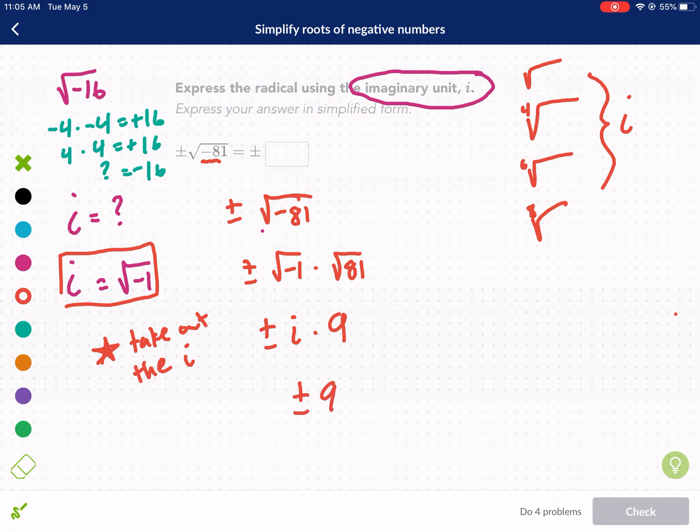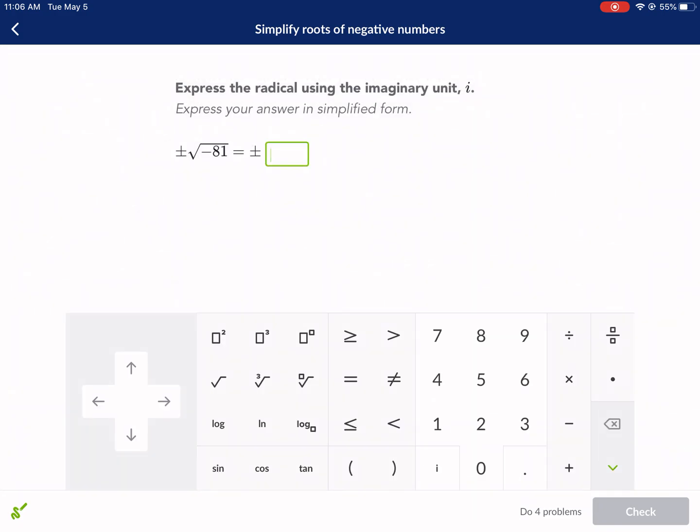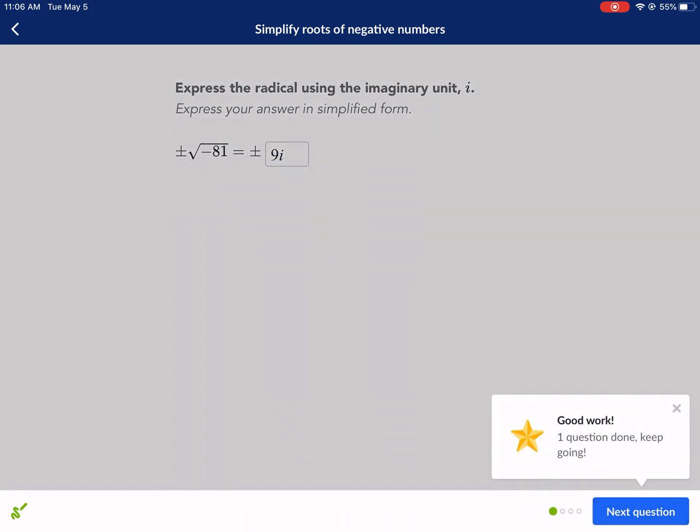So then we have plus or minus 9i. It's kind of like the variables. You wouldn't write 9 times x as x9. You would write it as 9x. So it's the same thing with the imaginary number. You're going to express it in terms with the i after the coefficient. So we're going to write 9i here. 9 and then i is that option. So we're going to check that. Good to go.